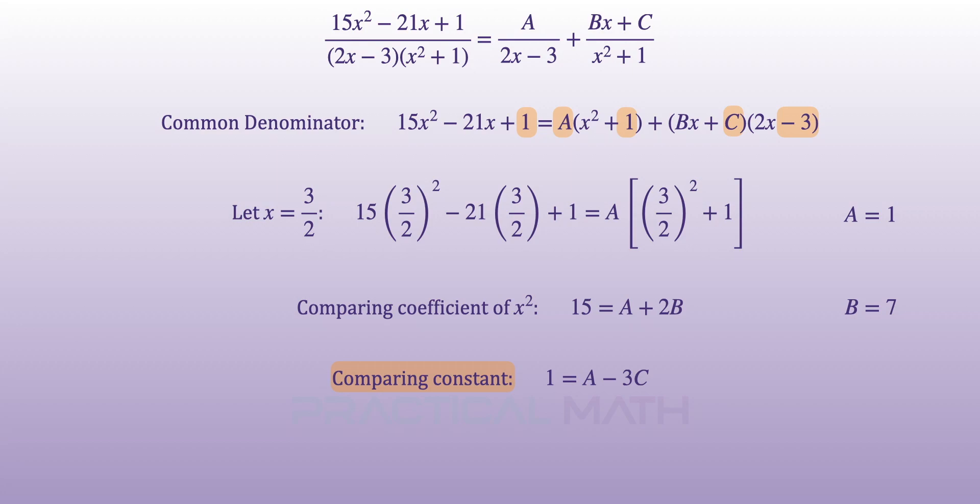Likewise, comparing constant will give us a 1 on the left and negative 3C on the right. Solving for C will give a result of 0.